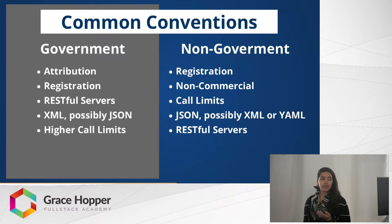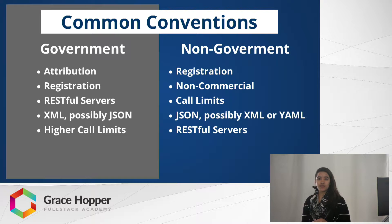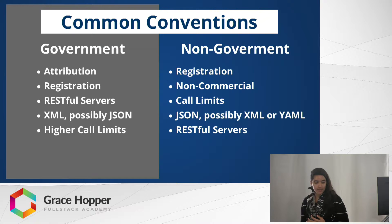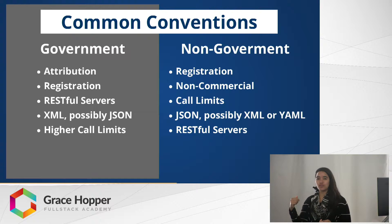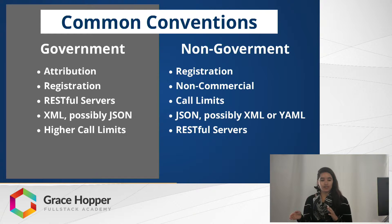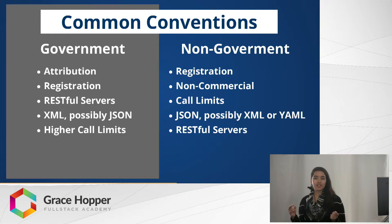Some common conventions of both of these groups — there's a lot of overlap. Government APIs specifically want attribution and they want to make sure that their data stands apart from your content, like this is coming from the government and this is coming from my blog. Both typically ask for registration for a key, so you can't just ping a URL and get data back — you have to include an API key in your header. Most often this is so they can keep track of call limits. A lot of these on both sides, government and non-government, have call limits — I found that the government APIs actually had higher call limits.